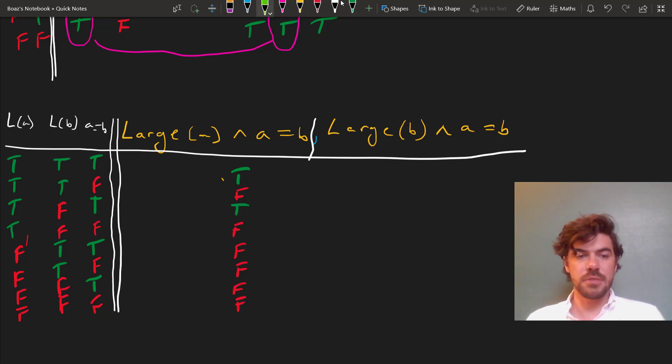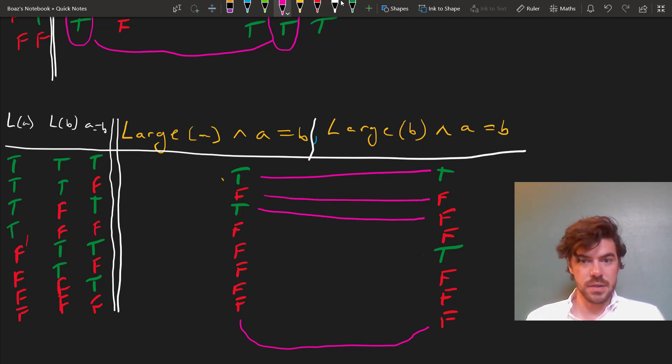Now B is large in the first row, and A equals B in the first row, so that's true. And it's also true in the fifth row, but all the rest of them are false. Well, when we compare these, we can see that they're not at all the same. They're the same on the first row, and they're the same on the second row, but on the third row and on the fifth row, they're not.